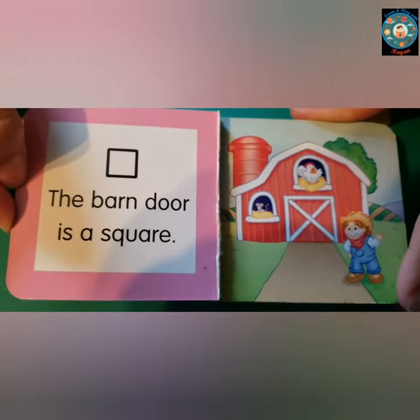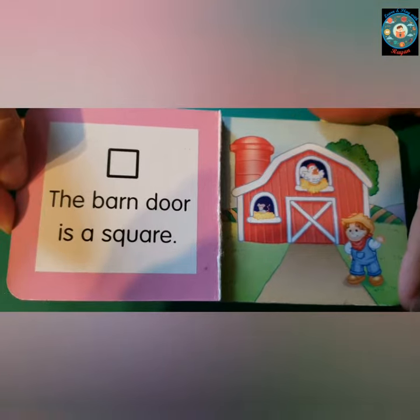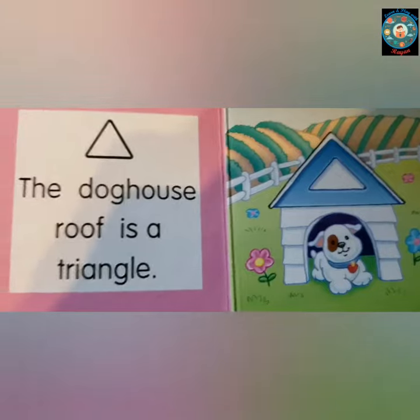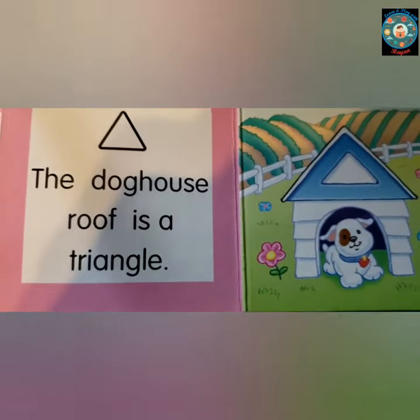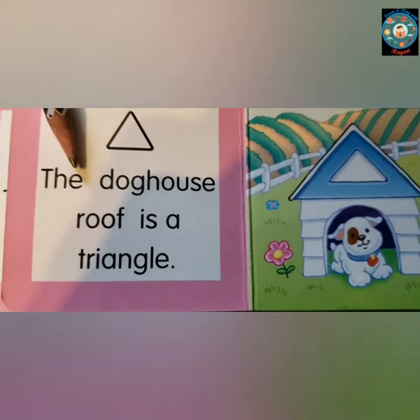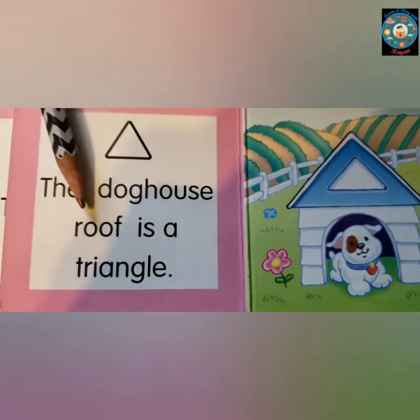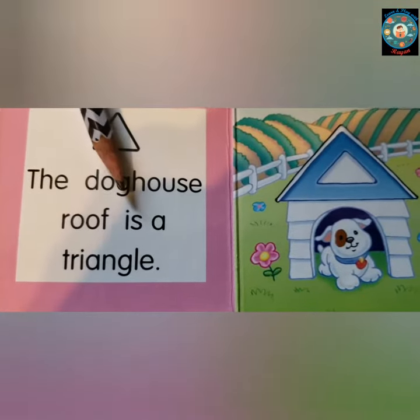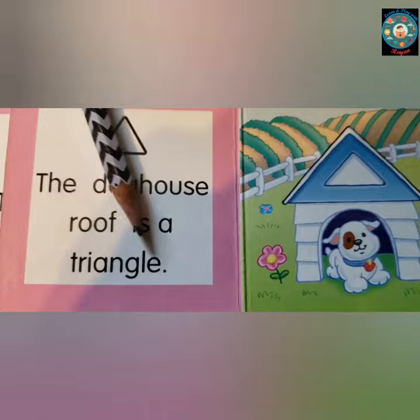The barn door is a square. The dog's house roof is a triangle.